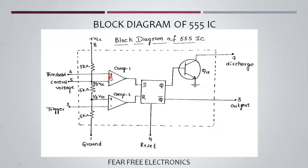A comparator has two terminals: a plus terminal (non-inverting terminal) and a minus terminal (inverting terminal). If the voltage at the non-inverting terminal is greater than the inverting terminal, the comparator output is 1. If the minus terminal voltage is higher, then the comparator output is 0.